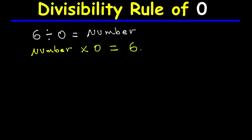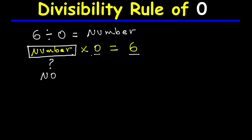But the question is: can you find a number that, when multiplied by zero, gives six? Your answer must be no. There is no number that when multiplied by zero gives six, because any number multiplied by zero is always zero.